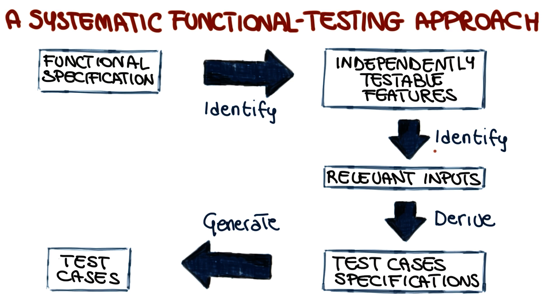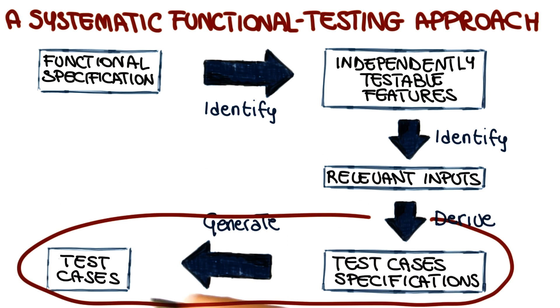So let's go back for the last time to our steps for systematic functional testing. What we just did was to derive test case specifications from a set of relevant inputs. The following step is to use these test case specifications to generate actual test cases.